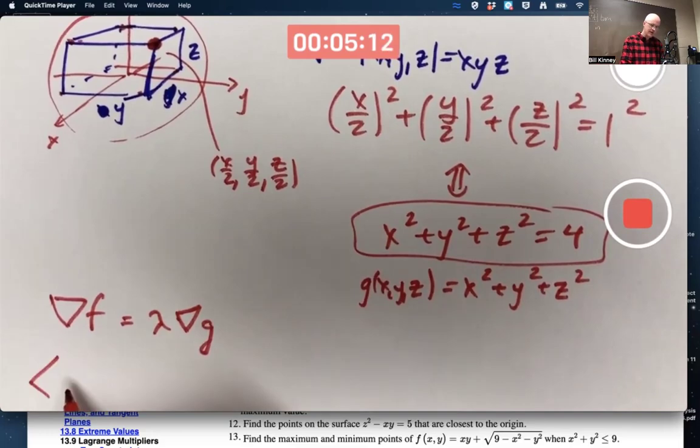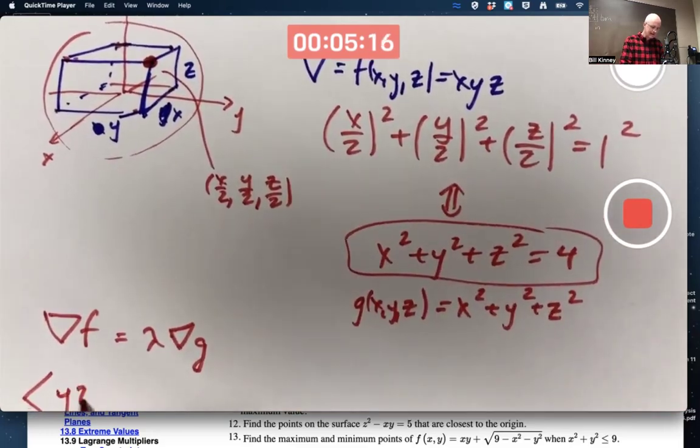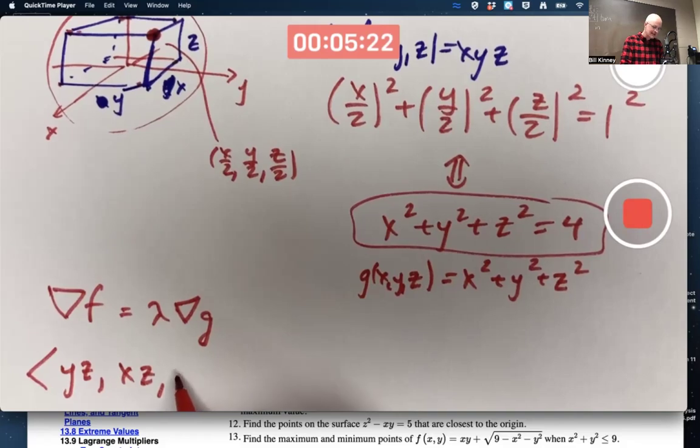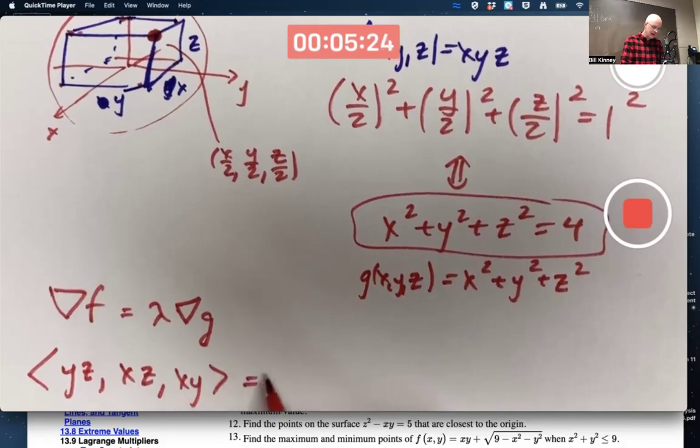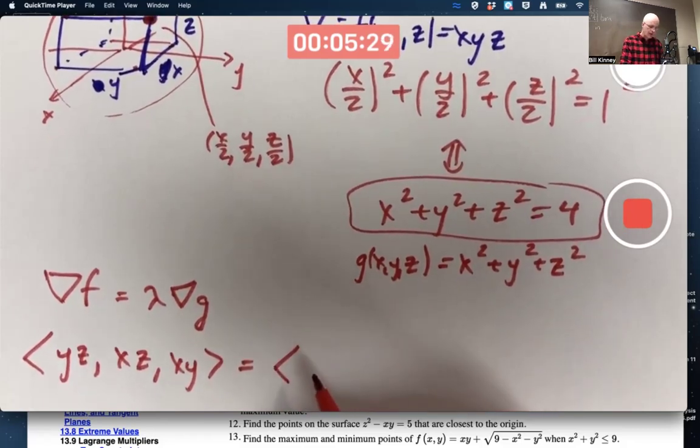Gradient of F consists of differentiate with respect to X, get YZ. Differentiate with respect to Y, get XZ. And differentiate with respect to Z, get XY. Equals lambda times the derivative of these things. And I'll go ahead and multiply times lambda right away.